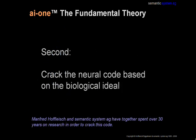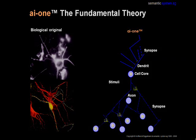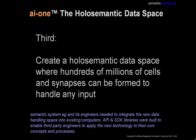The stimuli is a type of histogram representing the information request. Secondly, we had to crack the neural code by which the biological ideal operates within the cell cores and synapses. Altogether, we have spent over 30 man-years to crack this code. This is an animation of the communication between the cells. The trick is to understand and control this activity. The neural code is the key for total control of why and how the cells react.